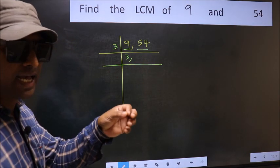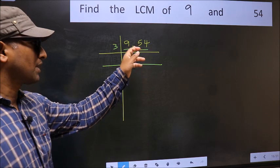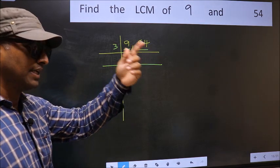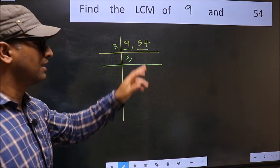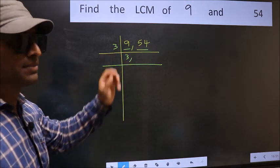For that, add the digits. 5 plus 4, we get 9 and 9 is divisible by 3. So this number is also divisible by 3.